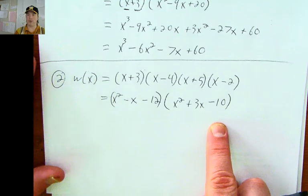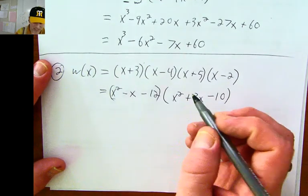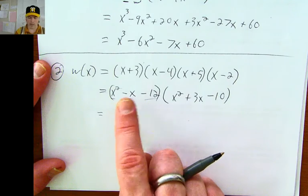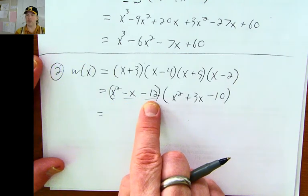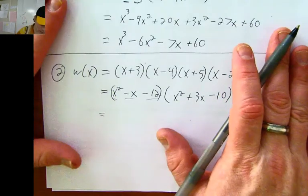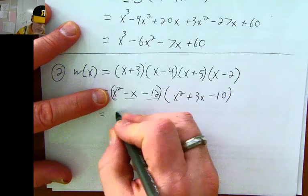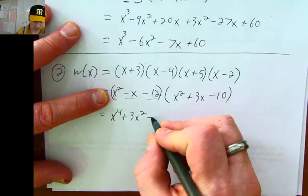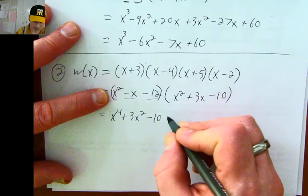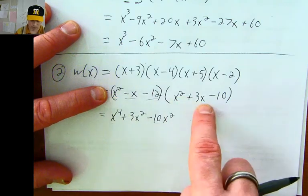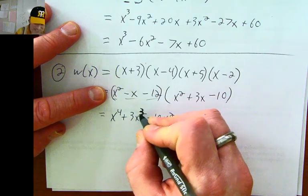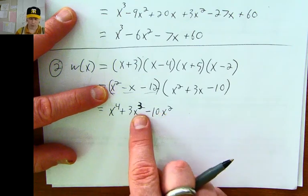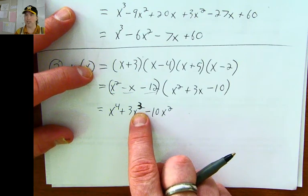Now I have to multiply these two results together and I'll do it in three steps. First, I'll distribute the x squared. Then I'll distribute the negative x. Third, I'll distribute the negative twelve. Distributing x squared: x squared times x squared is x to the 4th, x squared times positive 3x is positive 3x cubed — I caught a mistake there because the exponents should go down by one: 4, 3, 2 — and x squared times negative 10 is negative 10x squared.